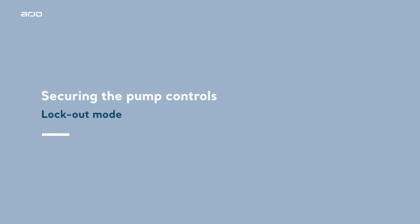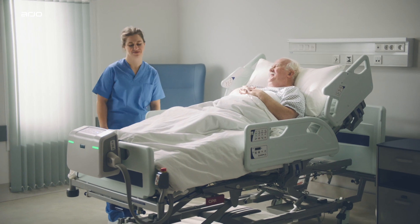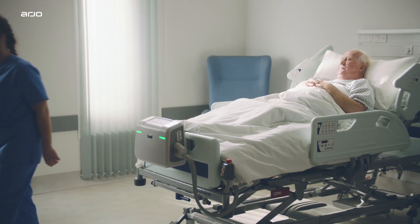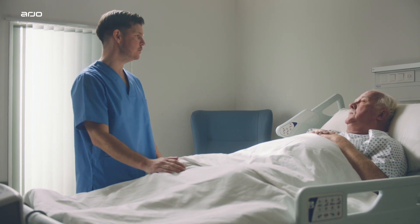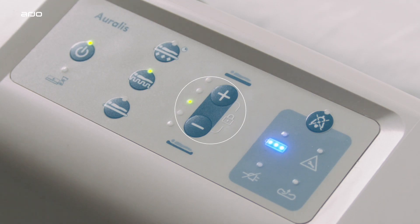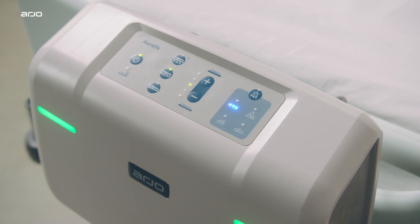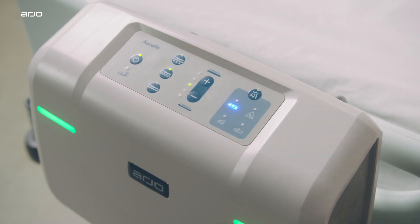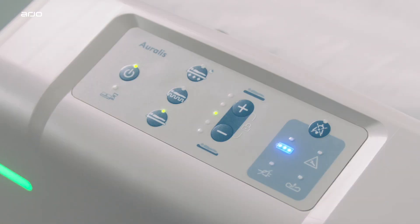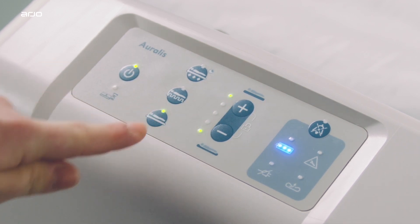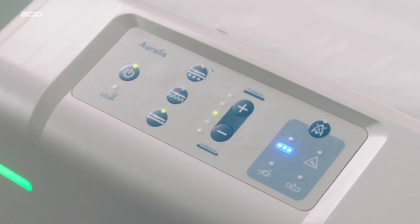Securing the pump controls: lockout mode. The Oralis is available with a lockout feature which, when enabled, locks the pump control interface from operation, supporting peace of mind for the caregiver. This is specifically designed to help minimize accidental or unauthorized operation of the pump and potential disruption to therapy. Lockout is activated or deactivated by simply pressing and holding the comfort control buttons simultaneously for at least two seconds. Comfort control indicators will flash indicating that the pump is either locked or unlocked. When the pump is in lockout mode, pushing any button will result in a negative tone and the top and bottom comfort control indicators flashing simultaneously to indicate the pump is in lockout mode.